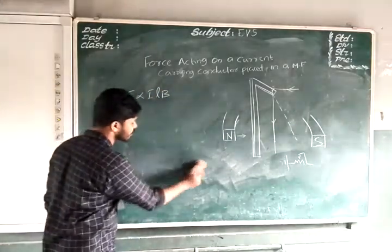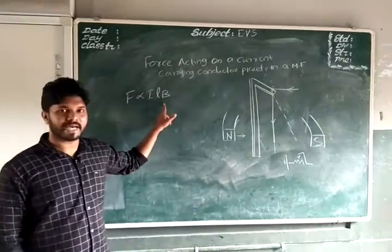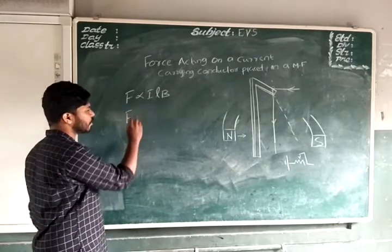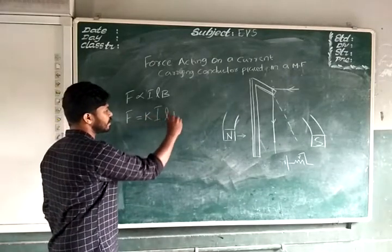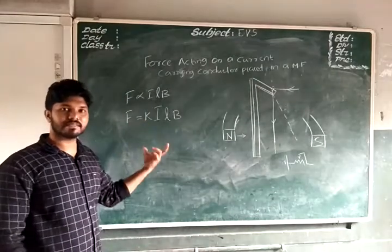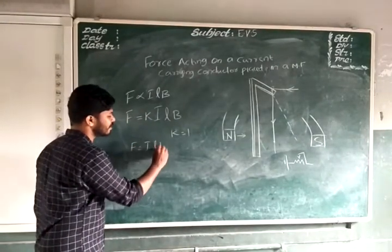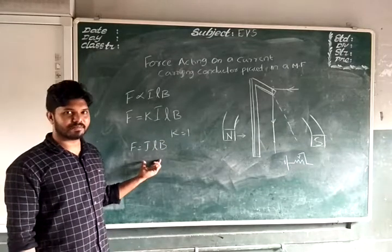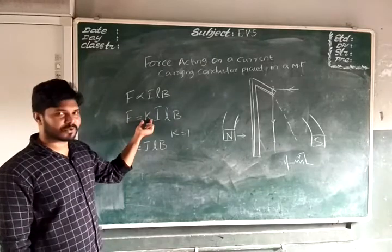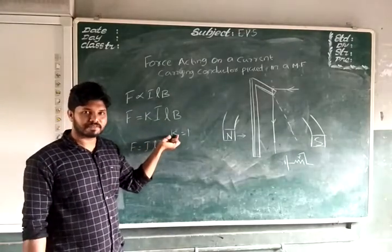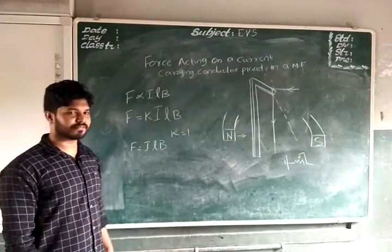Here I stands for the current passing through the conductor, L stands for the length of the conductor inside the magnetic field, and B stands for the magnitude of the magnetic field. This proportionality sign can be removed by introducing a constant K, and later the value of K was found to be 1. So F equals 1 × ILB, which gives us F = ILB.